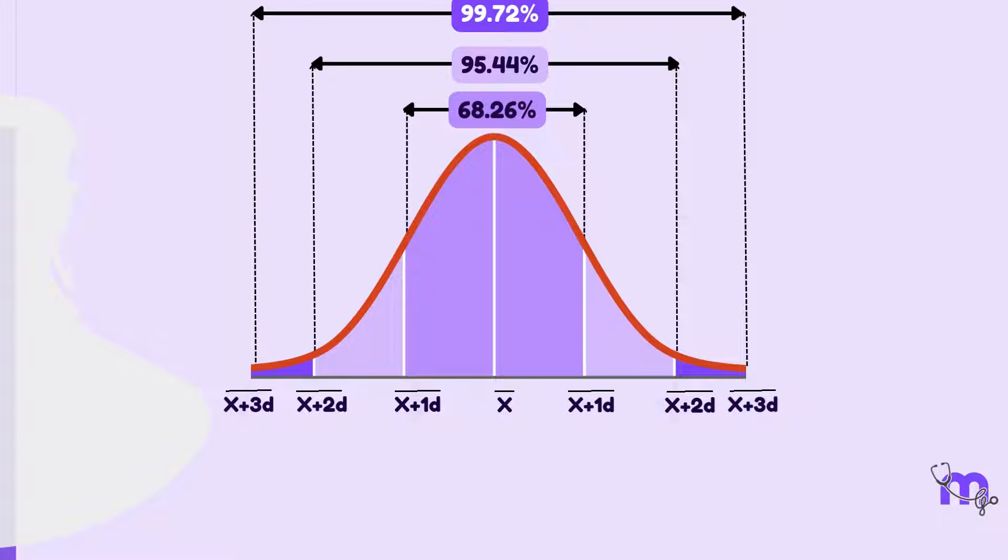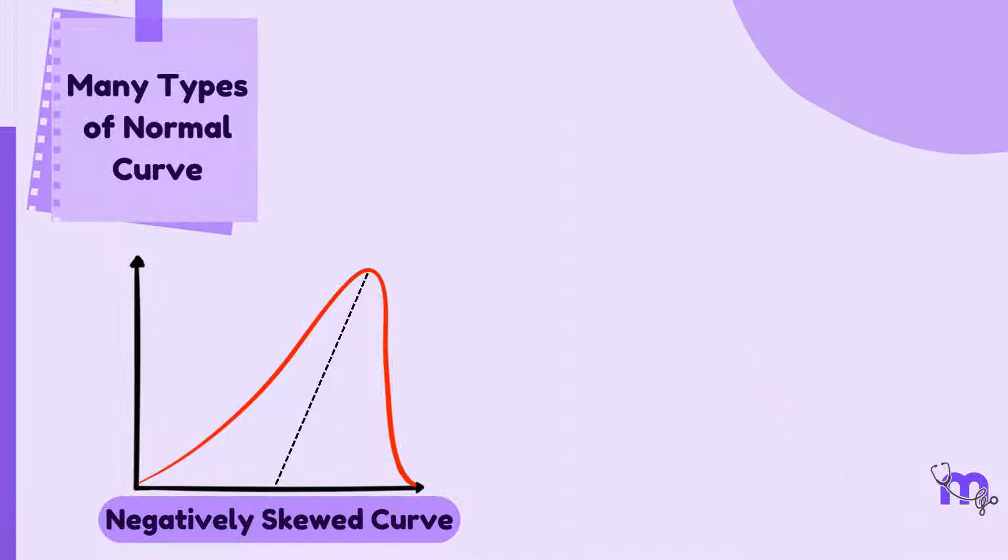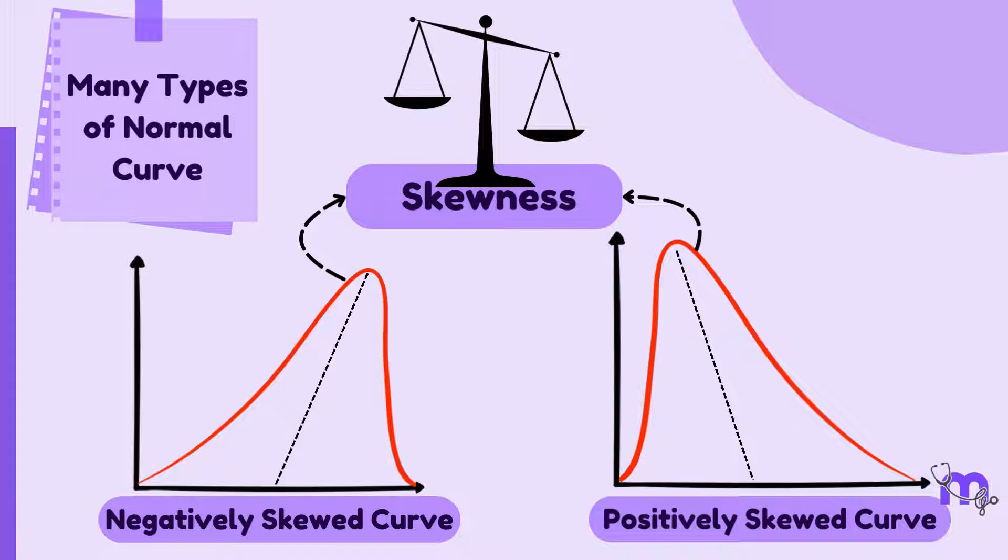The limits on either side of the mean are known as confidence limits. Now, note that there might be many normal curves, like the negatively and positively skewed curves. In this case, skewness measures the asymmetry of a distribution.